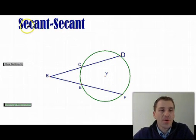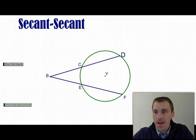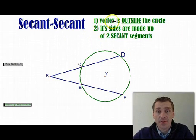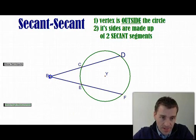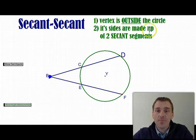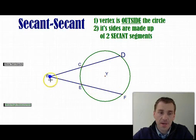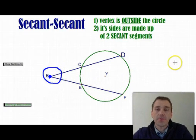The first is the secant-secant angle. Its definition: the vertex is outside the circle, and its sides are made up of two secant segments. You can see the vertex right there, outside the circle. DB is a secant segment and FB is a secant segment. The question is: how do you find the measure of that secant-secant angle?